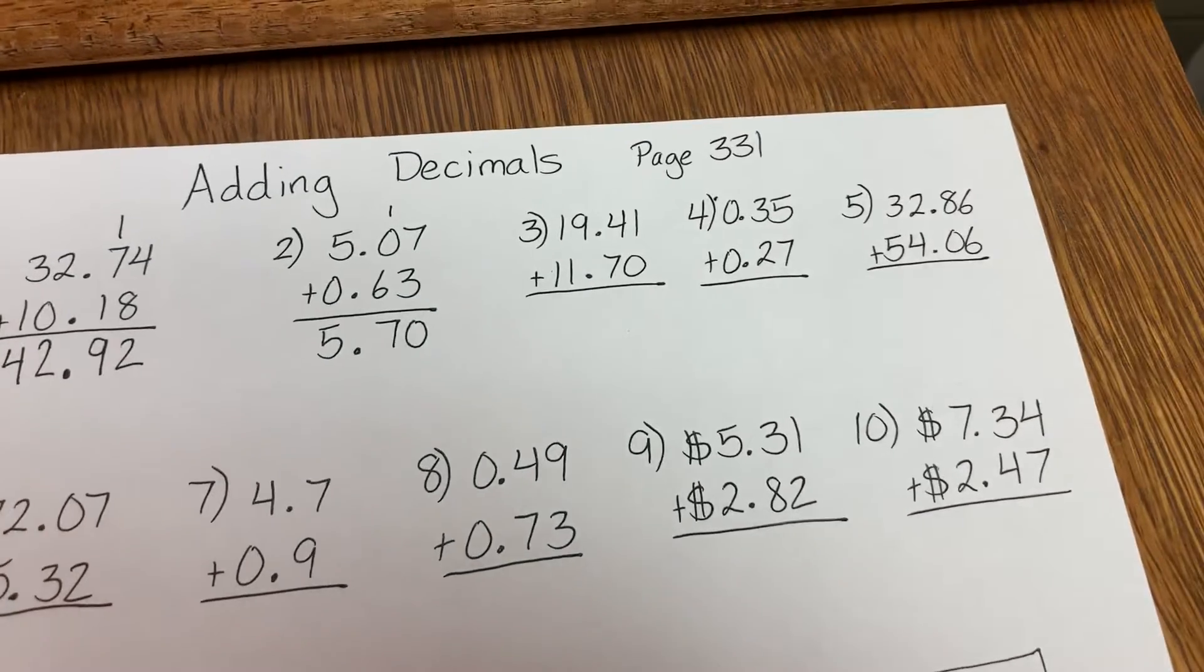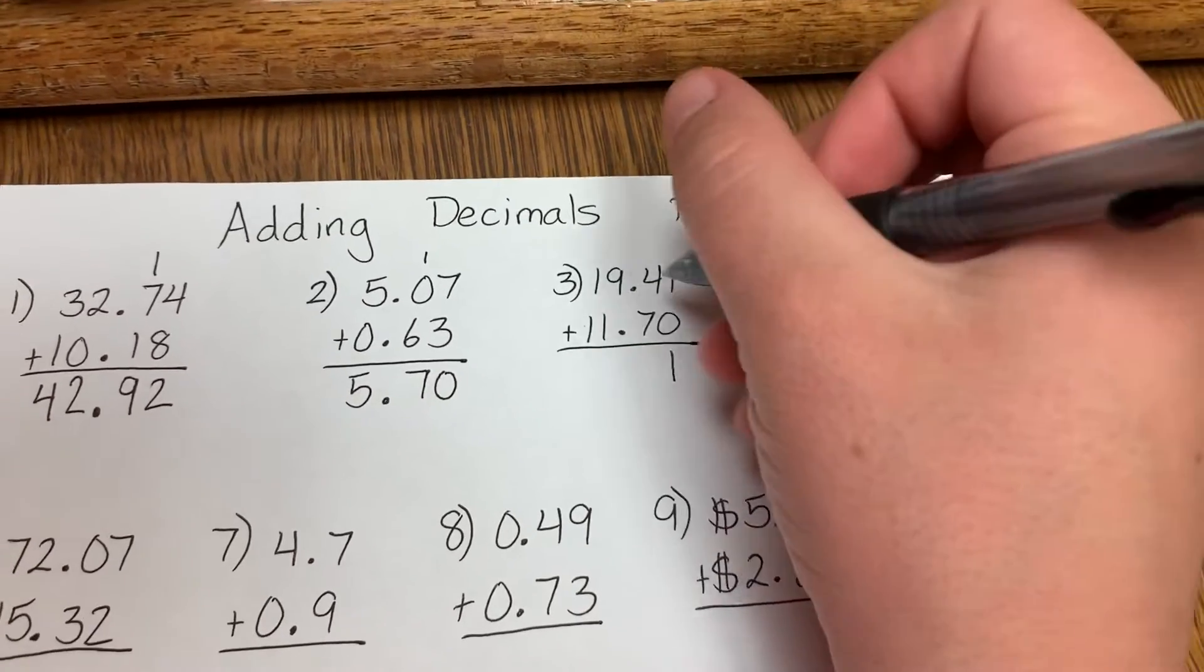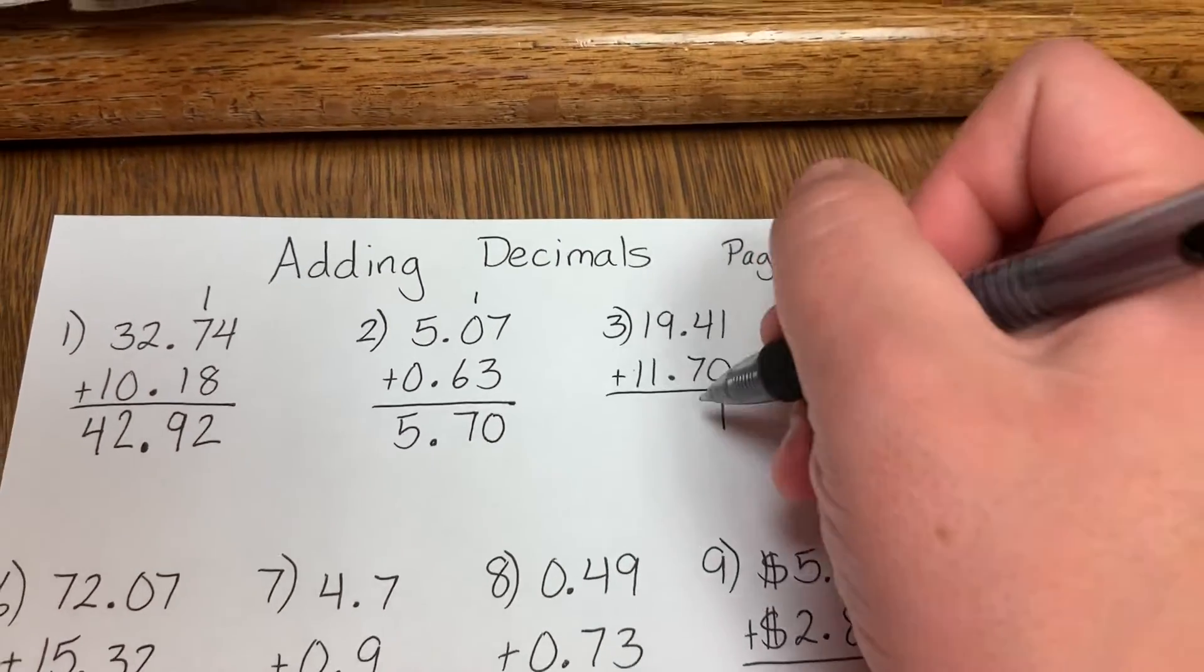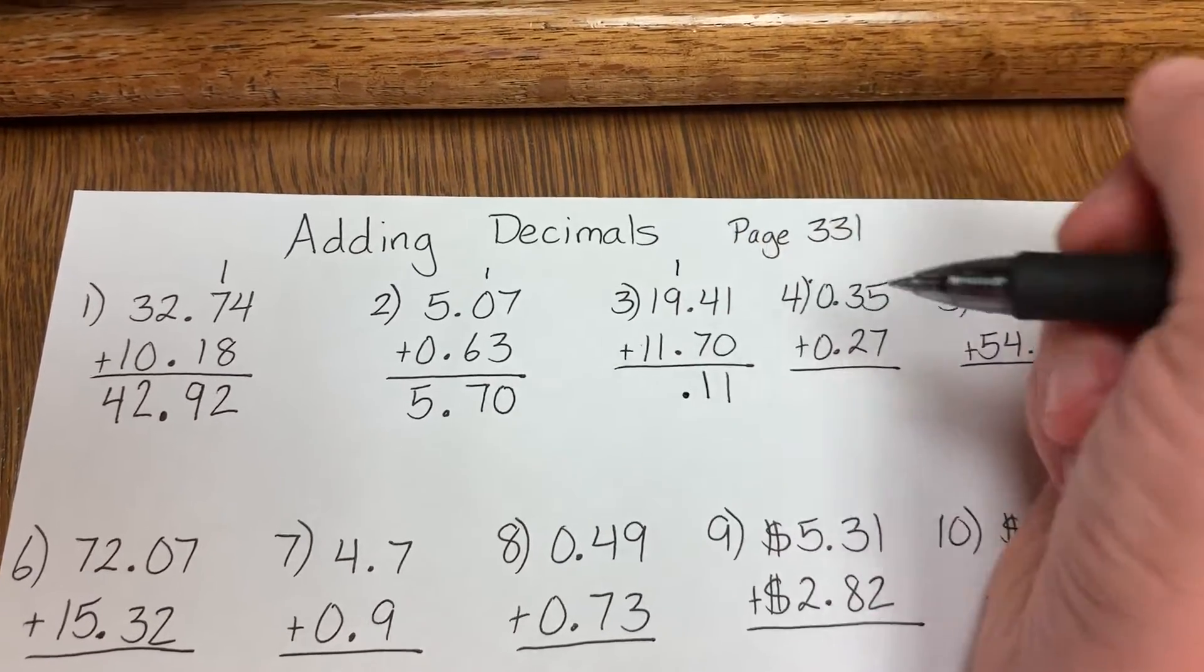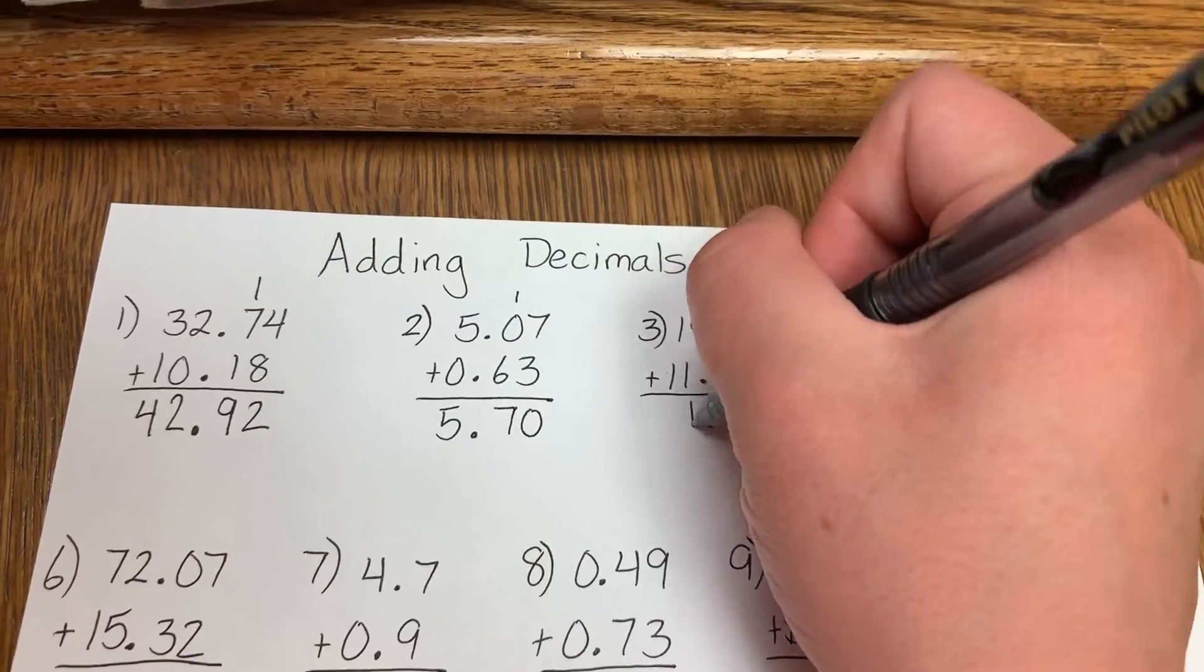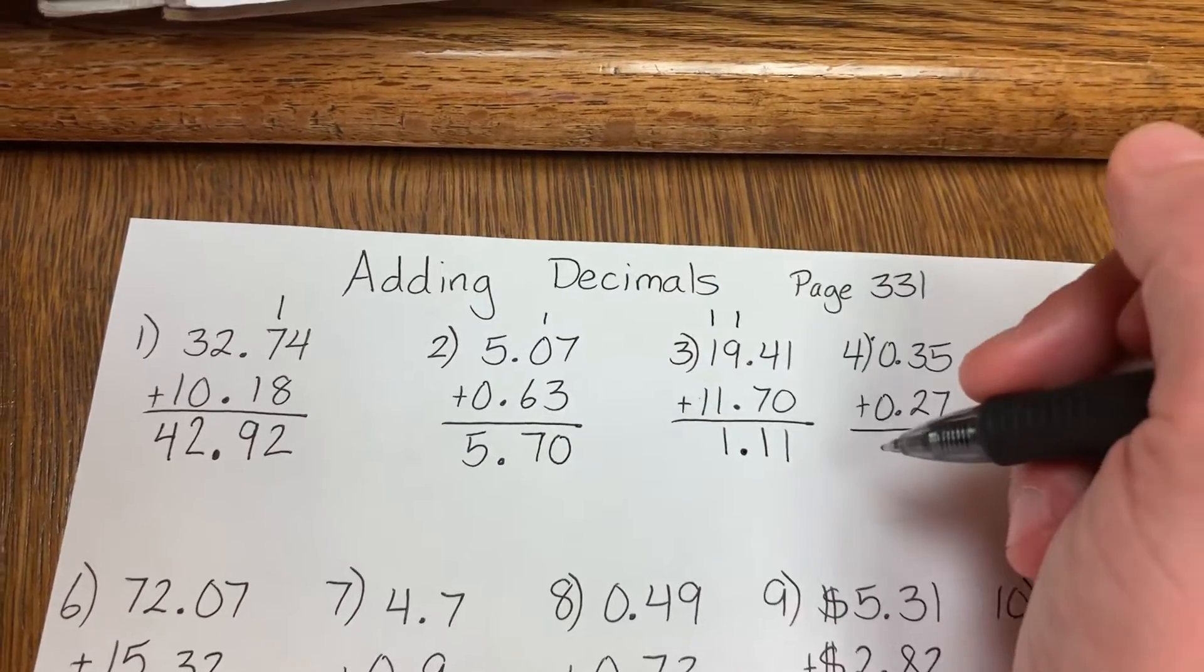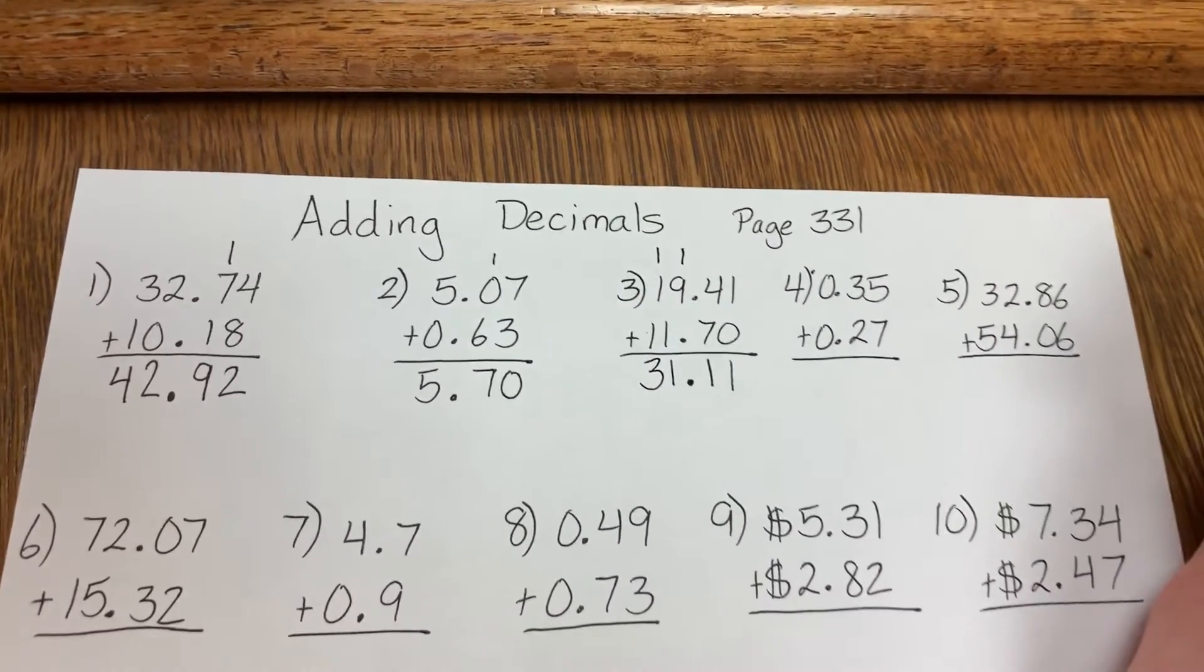Number 3: 1 plus 0 is 1. 4 plus 7 is 11, so 1 down, carry the 1. Bring down the decimal. 1 plus 9 is 10, 10 plus 1 is 11. 1 down, carry the 1. 1 plus 1 plus 1 is 3. So your answer is 31.11.